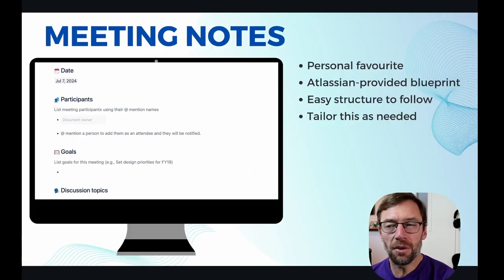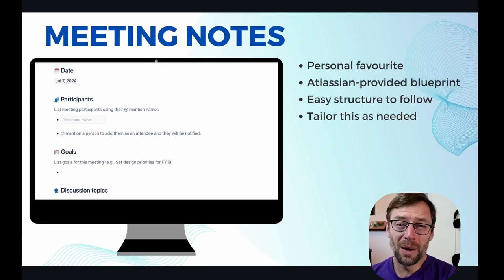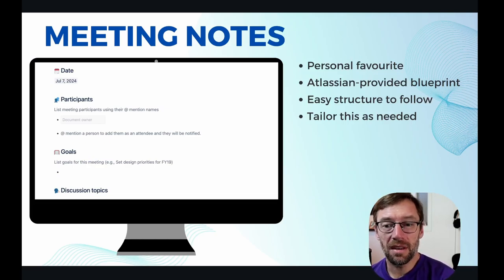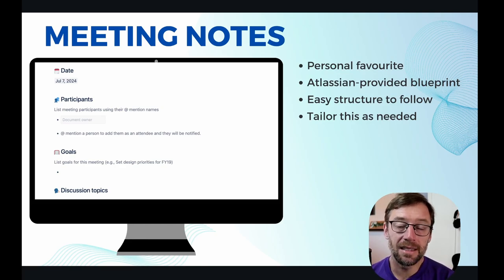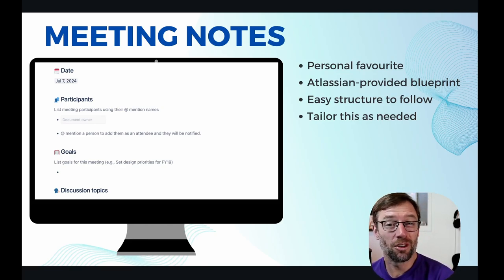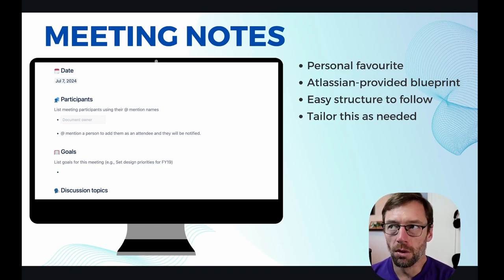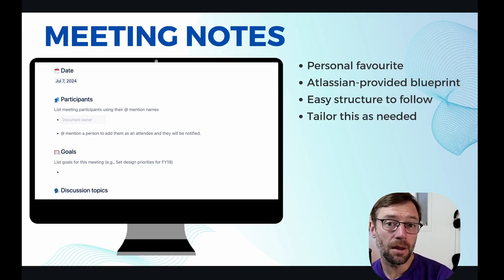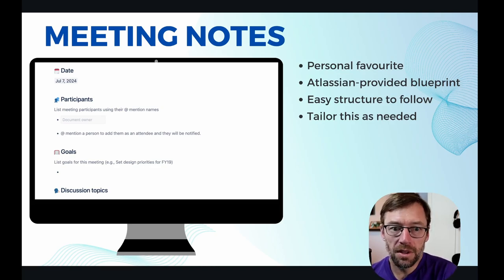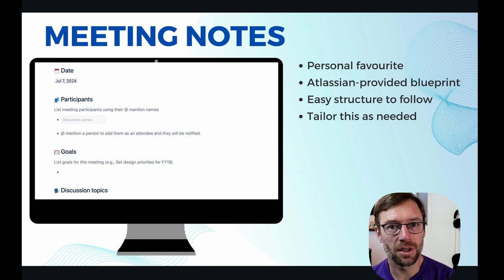I use Confluence quite a bit for meeting notes. I have hundreds of these, and this is a built-in template called a blueprint that Atlassian gives us. It's one of my favorite things in Confluence. It gives me a great structure — it lets me record who was there, what the goal of the meeting was, what happened, and at the bottom it includes spaces for action items and decisions. I'll encourage you to tailor this template or design your own that best fits your needs.